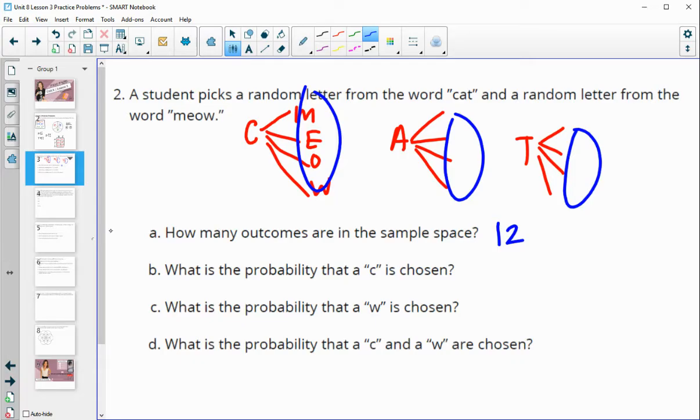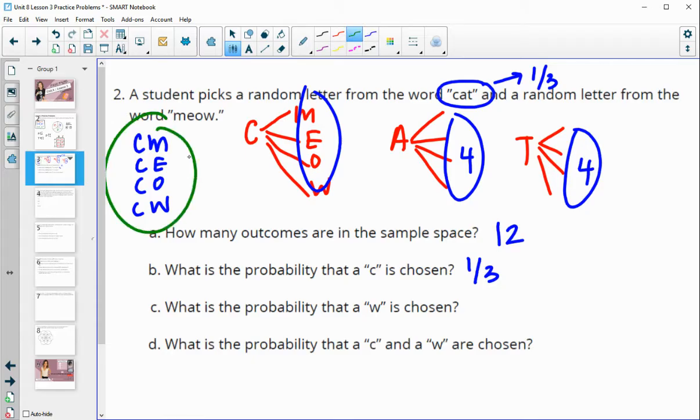So then what is the probability that a C is chosen at random? Well, out of the cat, it was a one in three chance, which will be because we'll have four C chances. We'll have C, M, C, E, C, O, C, W. None of these four options will have C and none of these four. So you could think of it as one in three from the word cat or from your sample space, you could think of it as four out of 12, which then also simplifies to one third.